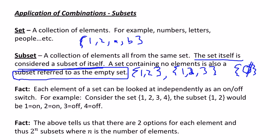A couple of facts. The first fact is you can consider subsets as if each element is either on or off. So if you consider the set {1, 2, 3, 4}, the subset {1, 2} would just be 1 being on, 2 being on, 3 being off, 4 being off. Every subset — you're just thinking: do I have 1 in it or not? Do I have 2 in it or not? Do I have 3? Do I have 4? If they were all off, that would be the empty set. If they were all on, that would be the set itself.